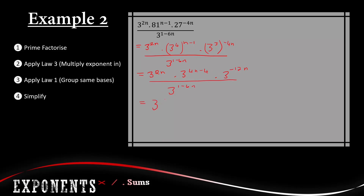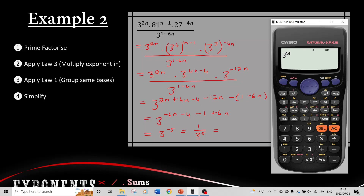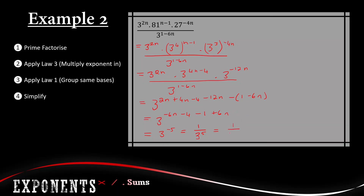Grouping all the threes: we add the top exponents — 2n plus 4n minus 4 minus 12n — then subtract the bottom: 1 minus 6n. Adding the n-terms: 2 plus 4 is 6, minus 12 is negative 6n. Then negative 4, minus 1, plus 6n: the 6n terms cancel to zero, and negative 4 minus 1 is negative 5. So we have 3 to the power of negative 5, which becomes 1 over 3 to the power of 5. Since 3 to the power of 5 is 243, the answer is 1 over 243.